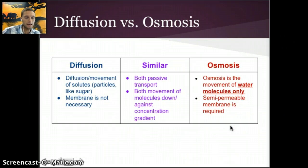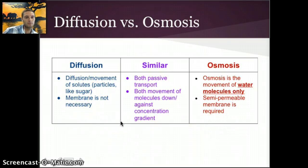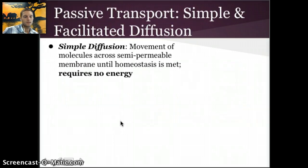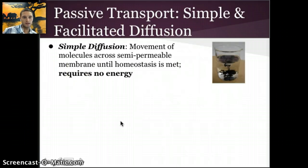Here's a diagram that outlines the differences. Diffusion is the movement of solutes and a membrane is not necessary, while osmosis requires a semi-permeable membrane and involves only water molecules. Both are passive transport and both move down the concentration gradient — from an area of high concentration to low concentration. Both are examples of simple diffusion: movement of molecules across a semi-permeable membrane until homeostasis is met, with no energy required.